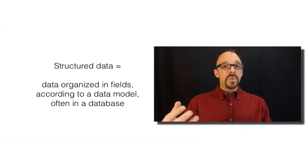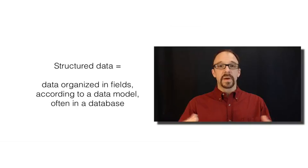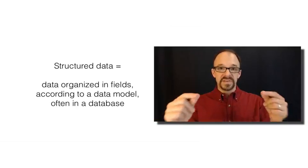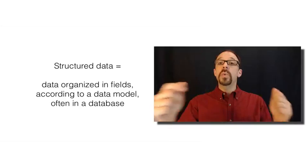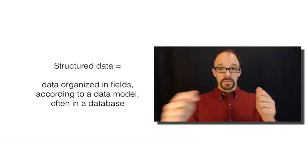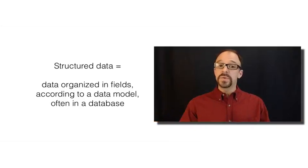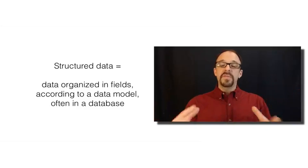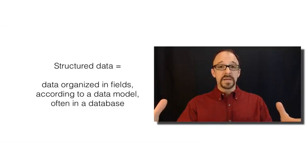If you have a logic of what fields exist — why you are requiring certain pieces of data — and then you can map out the relationships between those fields, elements, or entities, then that's a data model. If you can map out the logical structure of your data, that is your data model.